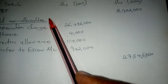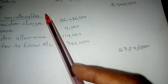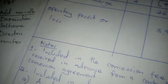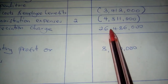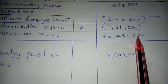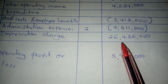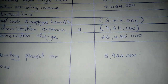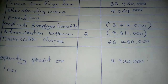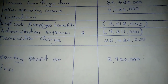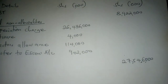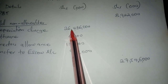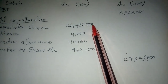Then you add the non-allowable deductions. Under non-allowable deductions, the first thing you write is the depreciation charge that was given in the question — the depreciation charge is 26,486,000.